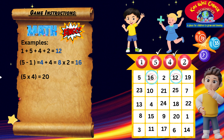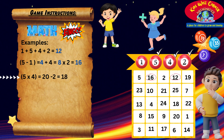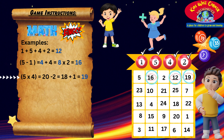Another example: five times four is twenty, then we subtract two, so twenty minus two equals eighteen. We add the one to get nineteen. Let's circle the number nineteen.